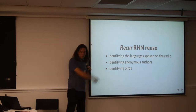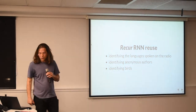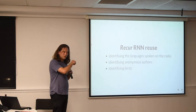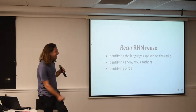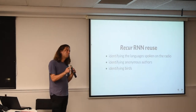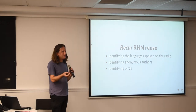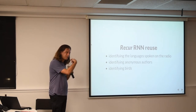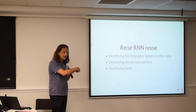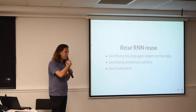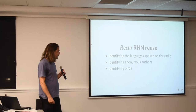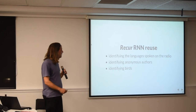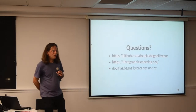The other thing I used it for was identifying anonymous authors. This code was world champion at identifying anonymous authors in a competition — rather than feeding it video frames, you feed it letters and it predicts the next letter, giving you a cross-entropy score. It turned out to be better than all the other approaches people were using.